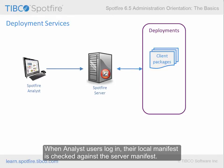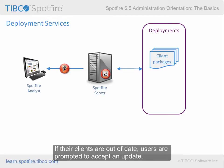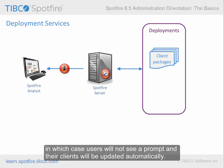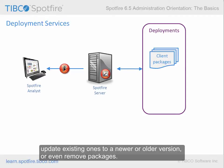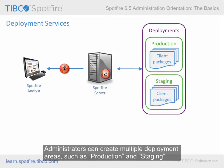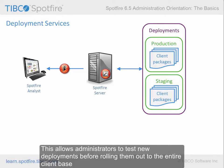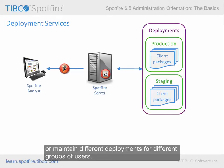When Analyst users log in, their local manifest is checked against the server manifest. If their clients are out of date, users are prompted to accept an update. Administrators can also choose to force particular deployments, in which case users will not see a prompt and their clients will be updated automatically. Deployment services can be used to add new client packages, update existing ones to a newer or older version, or even remove packages. Administrators can create multiple deployment areas, such as production and staging, to test new deployments before rolling them out to the entire client base, or maintain different deployments for different groups of users. The deployment services function is also used to keep the web player server up to date.